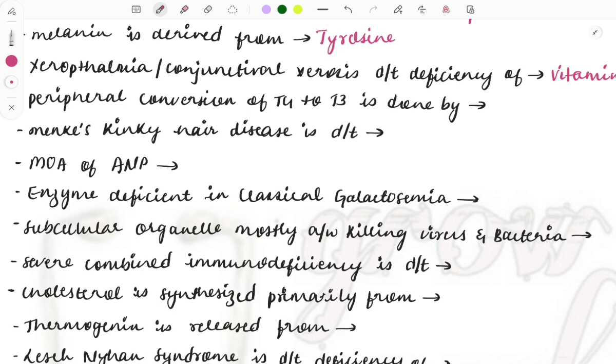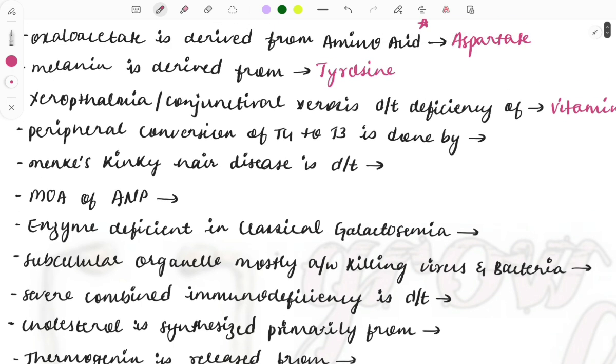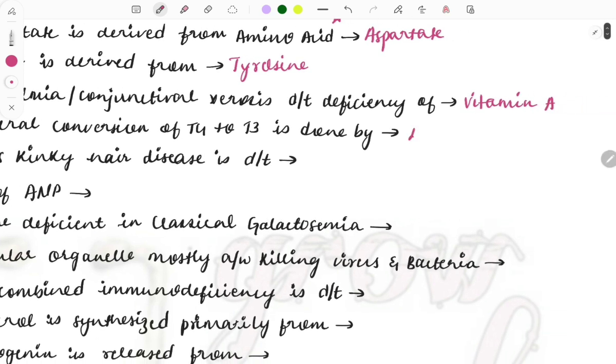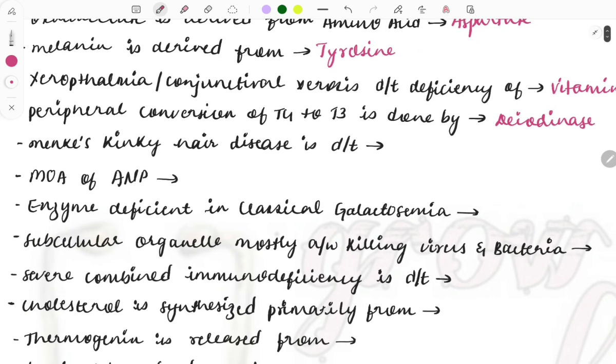Peripheral conversion of the thyroid hormone T4 to T3 is done by which enzyme? It is the diodinase.